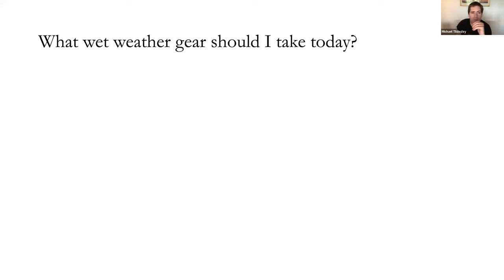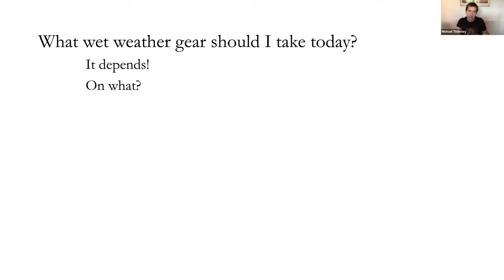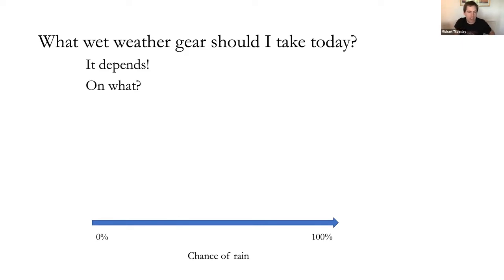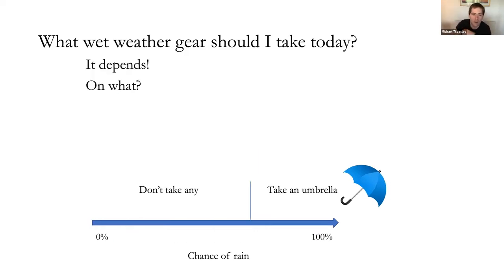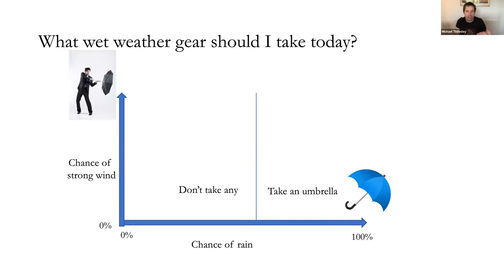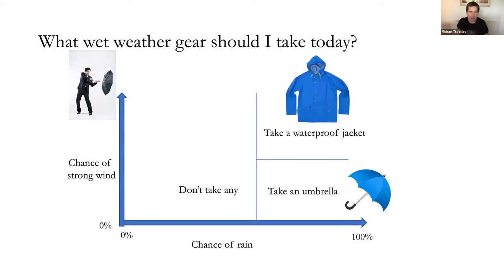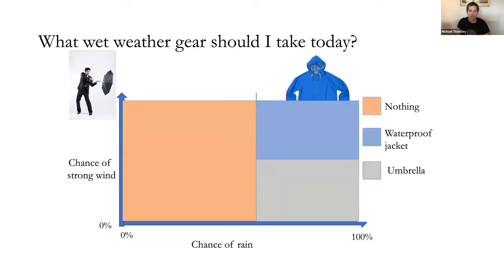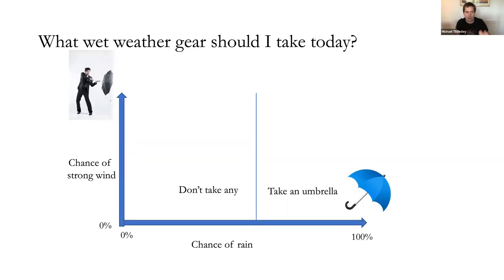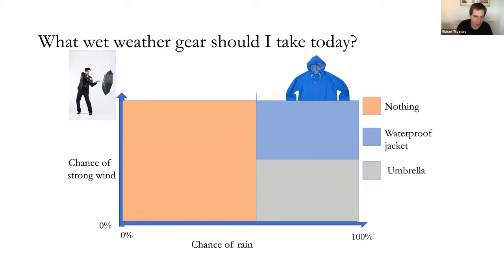An example: if you're going out for the day and need to decide what wet weather gear to take, it depends on the chance of rain. We assess risk based upon the chance of rain at any period of time, and based upon that risk we can decide whether we take an umbrella. There's also the chance of strong wind, which might influence what we decide because we don't necessarily want our umbrella to blow away. So here we have a simple decision space where based upon different metrics we can decide what to do.